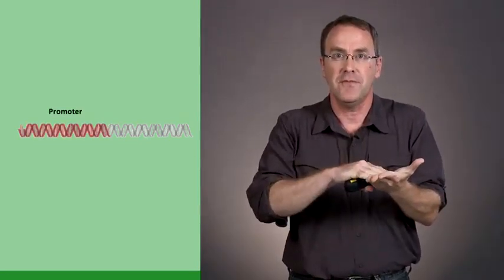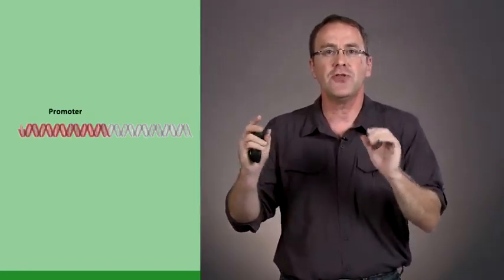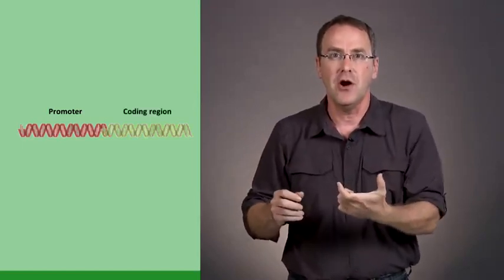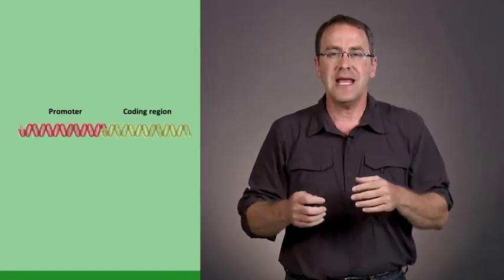We could talk about a gene having what's called a promoter—the part that tells the gene when to turn on and when to turn off. And then there's the coding region, the part that encodes for a protein or a particular function.